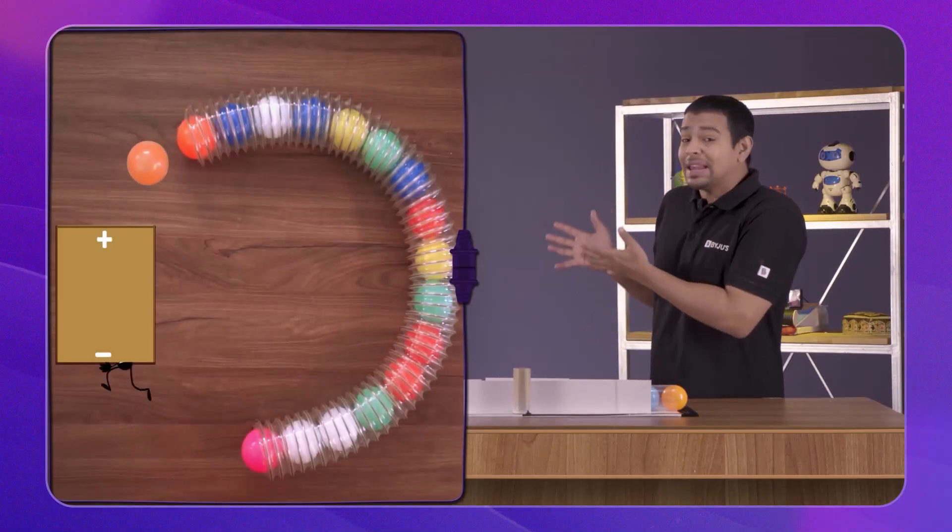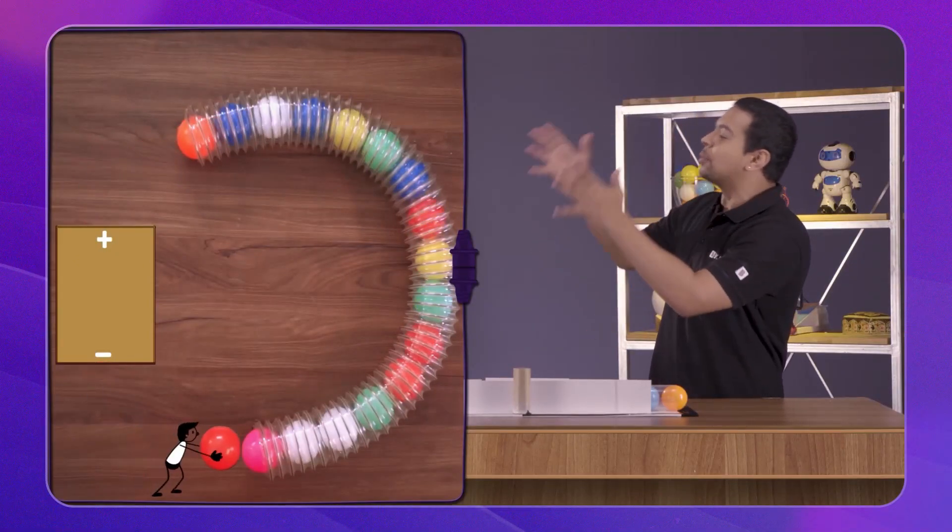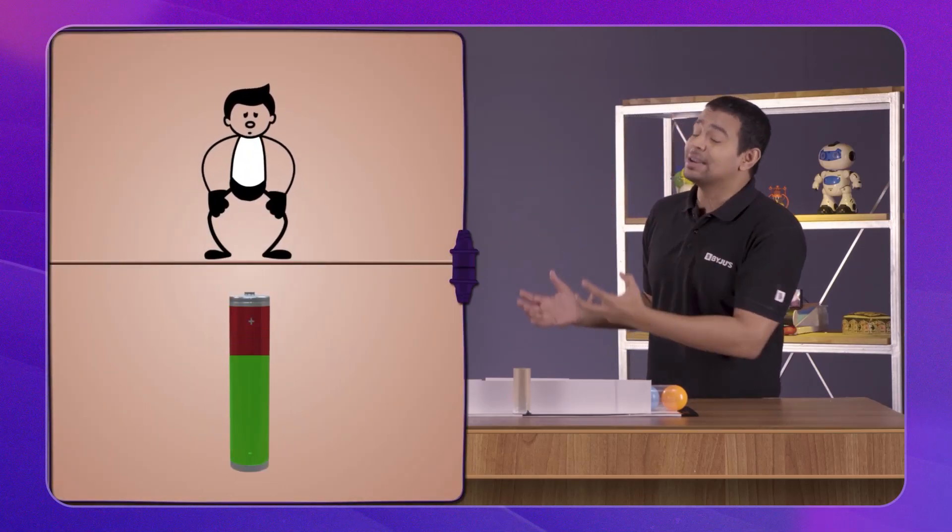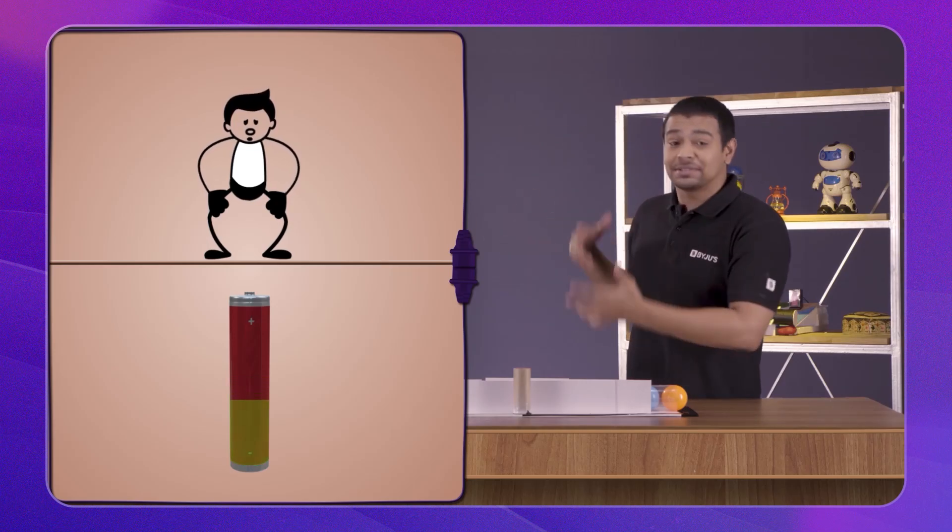The electric cell can be thought of as somebody who's getting really exhausted trying to move the balls through the tube. The electric cell is something that gets exhausted while trying to move charged particles through the wire.